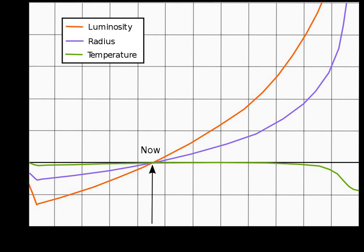The solar luminosity, L, is a unit of radiant flux conventionally used by astronomers to measure the luminosity of stars, galaxies, and other celestial objects in terms of the output of the Sun.